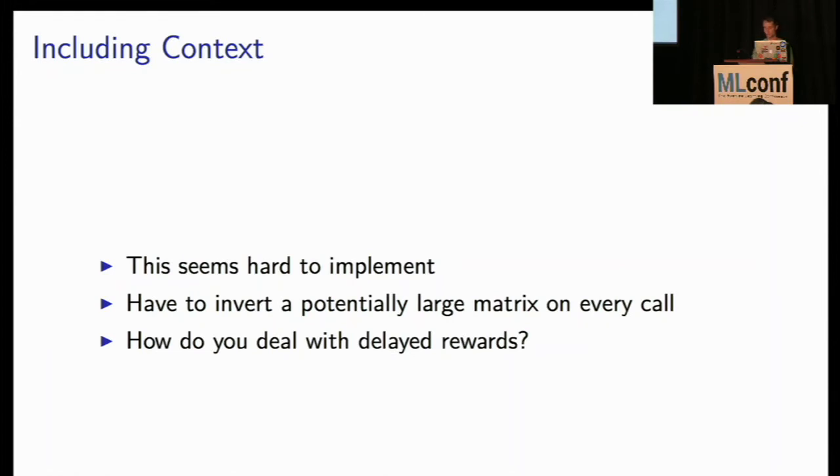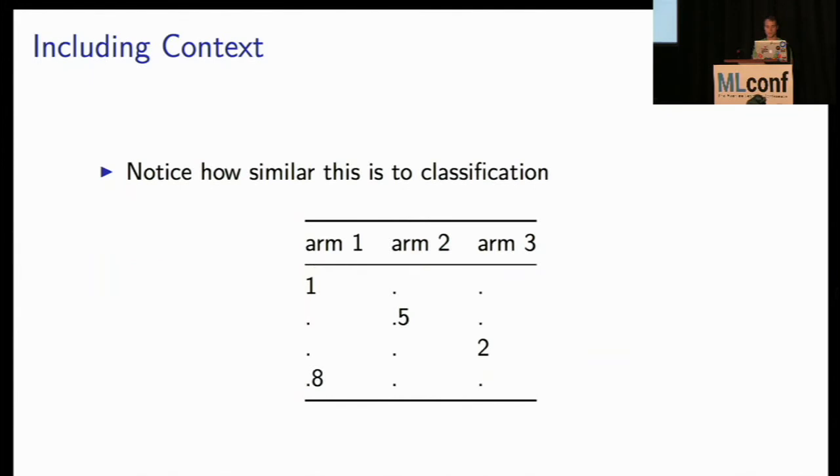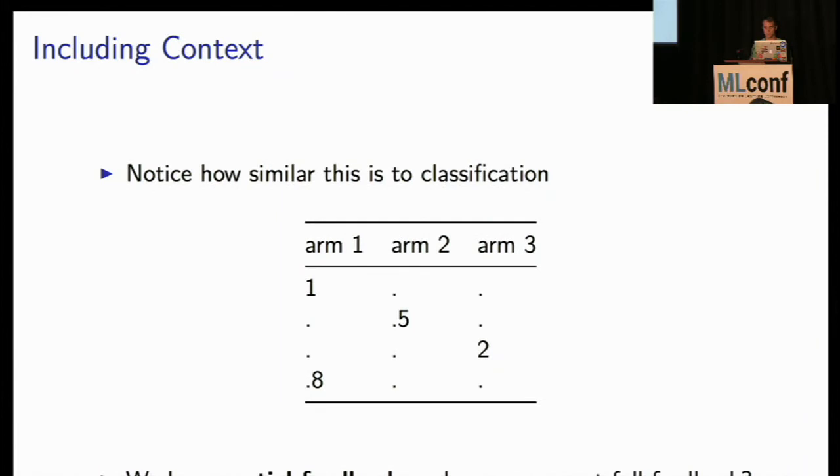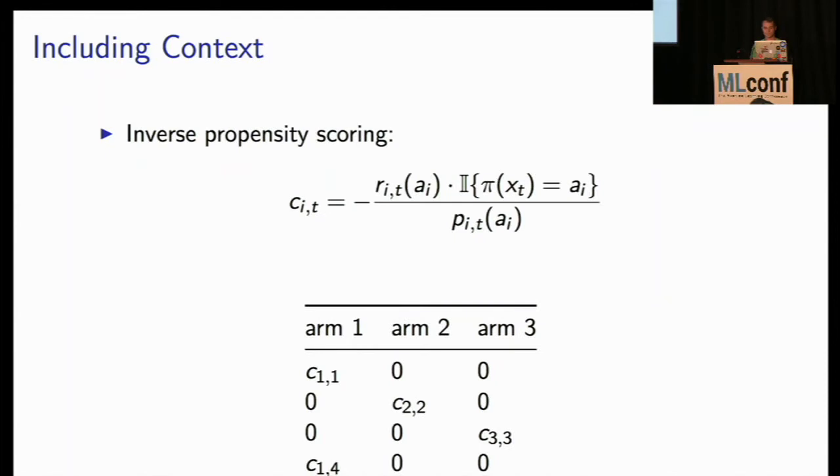So there's actually a really cool trick that you can use to think about this. So if you look at this, say, so here we have our three different arms, the three different strategies for product recommendations, and we're observing rewards. So in the first row, the first time period, we observed that we played arm one, we got a reward of one. The second time we played arm two, we got a reward of .5. We played arm three, we got a reward of two, and then so on and so forth. You can start to see that this is actually really similar to a supervised learning situation. We're just missing some data. We've got partial feedback. So how could we get full feedback? How could we fill in those dots?